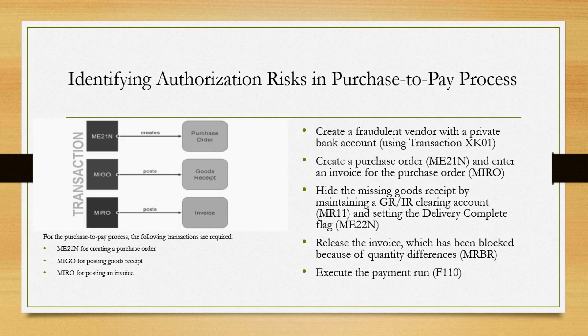Now let us identify what business risks can exist when authorizations are not controlled, by taking an example from the purchase-to-pay process. In the case of uncontrolled assignments or excessive authorizations, the user might be able to perform the following steps and initiate a fraud.